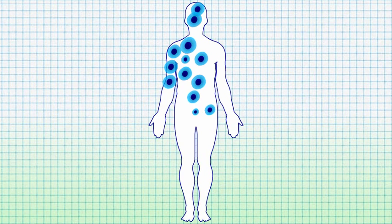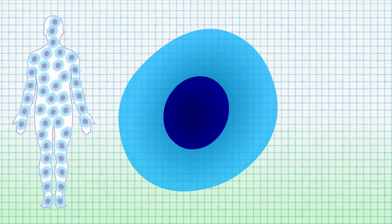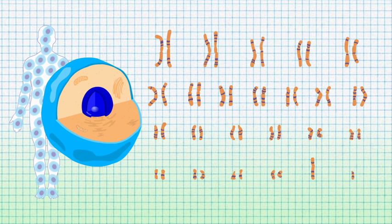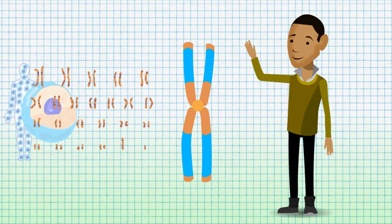Human beings are made up of millions of cells. Inside every cell lies a nucleus which holds 46 chromosomes. Our chromosomes carry genes which make us into human beings.